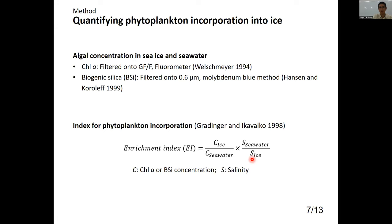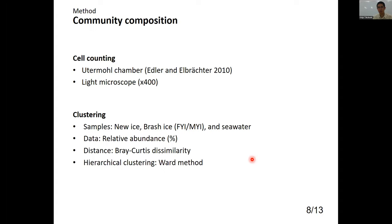Community composition of new ice, brush ice, and seawater was also investigated. Cell counting was conducted by light microscope, and using relative abundance, a hierarchical clustering analysis was performed on the three sample types — new ice, brush ice, and seawater.